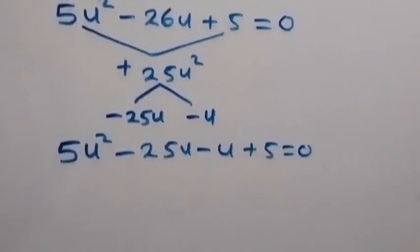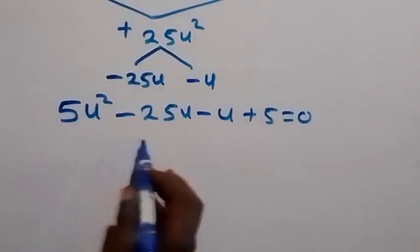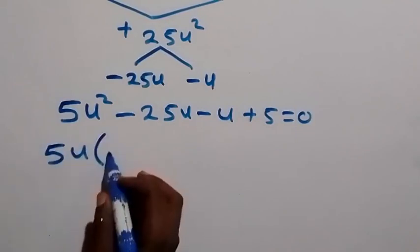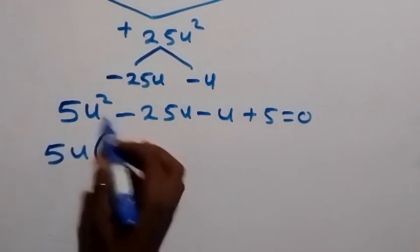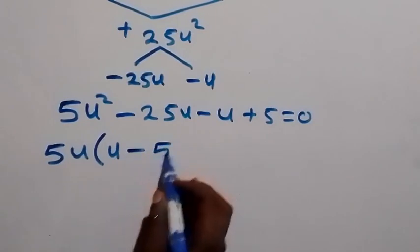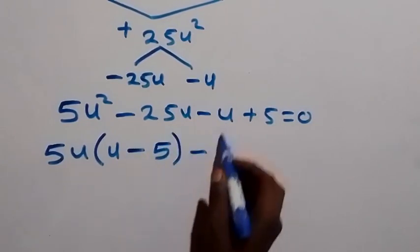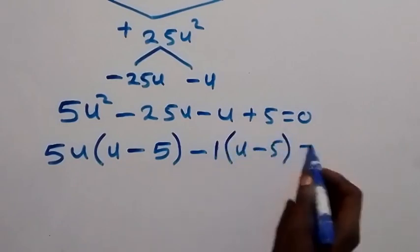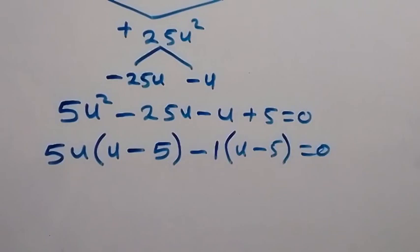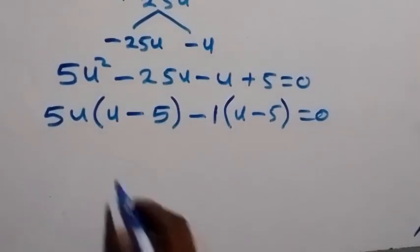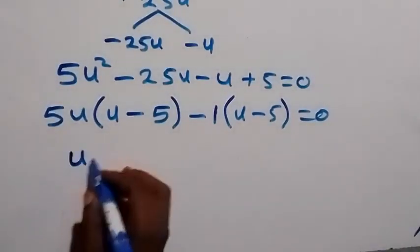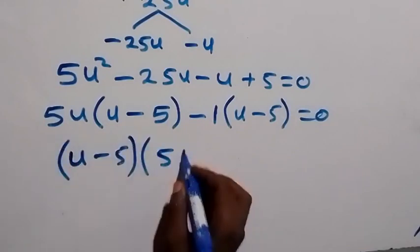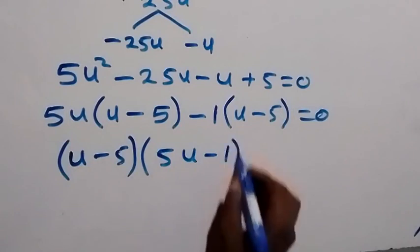Now, we group these in pairs. What is common between the first two terms is 5u, so we have 5u times open bracket u minus 5. Then, here we have minus 1, that's minus 1 into bracket u minus 5, which is equal to 0. From here, we have u minus 5 common, so this gives us u minus 5 times 5u minus 1 equals to 0.